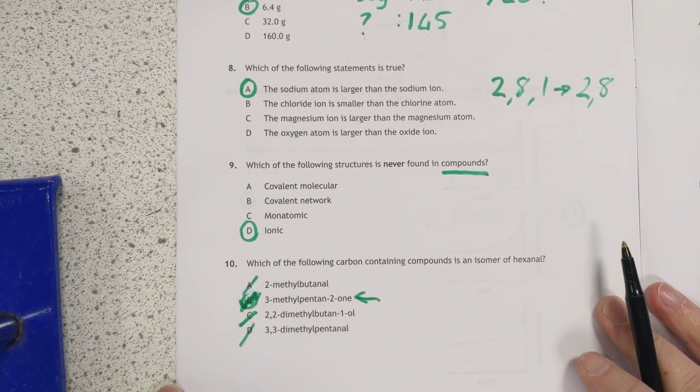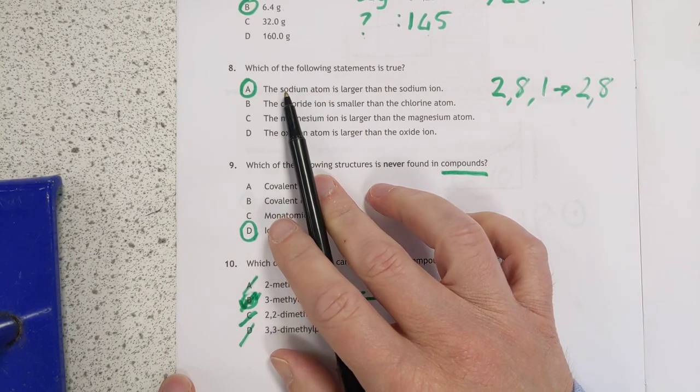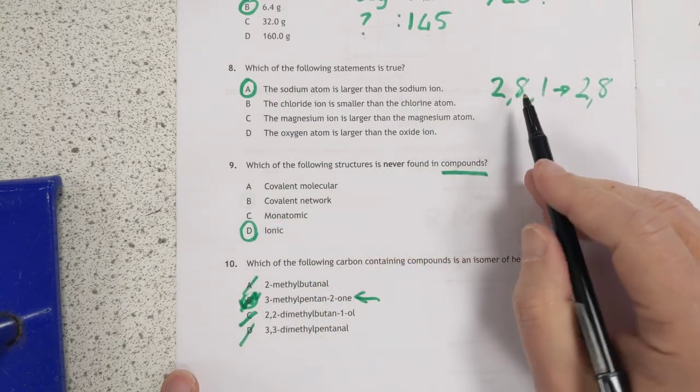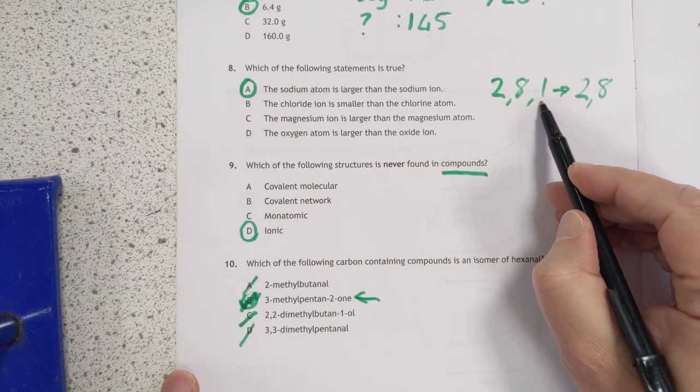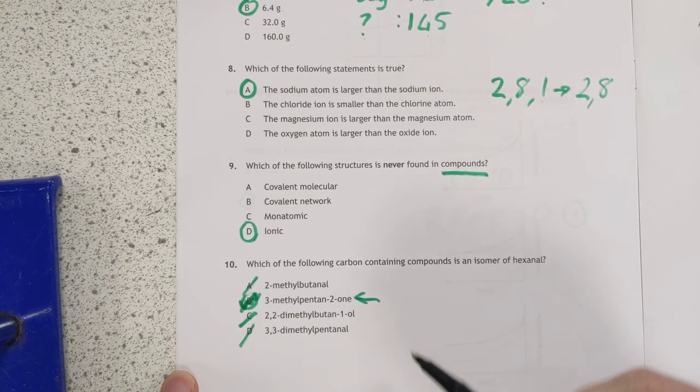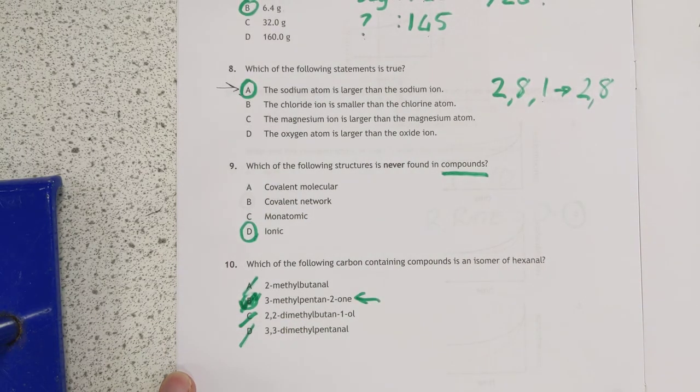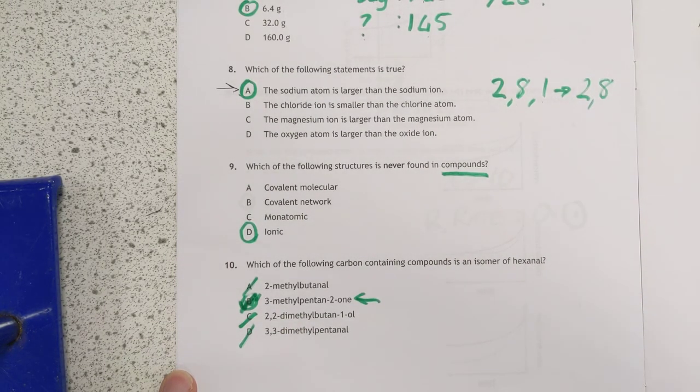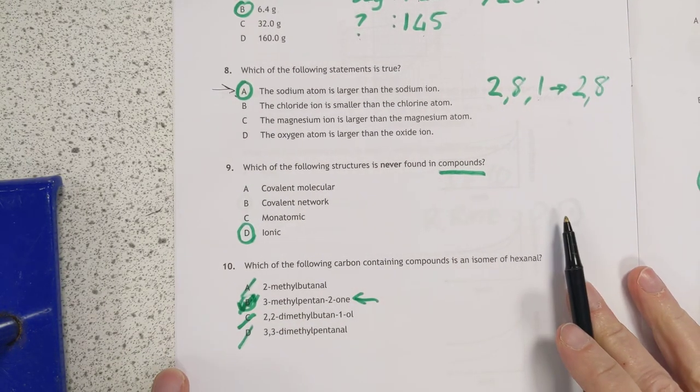Which of the following statements is true? Sodium atom is larger than sodium ion. And that is true because we start with 2-8-1, we end up with just 2-8-1, we've lost a layer of electrons, the rest are all wrong. Surprising number of A's, being the correct answer, both in this and National 5 and Advanced Higher, I think, this year. Change of plan by SQA.